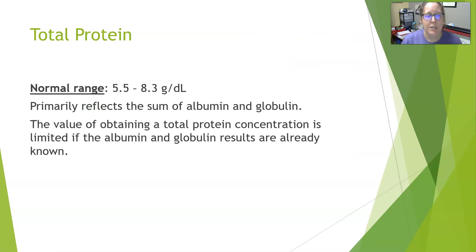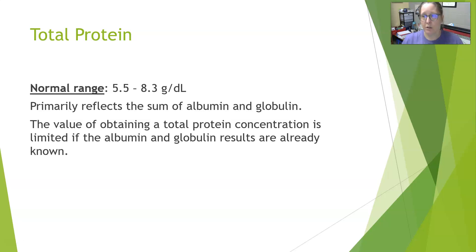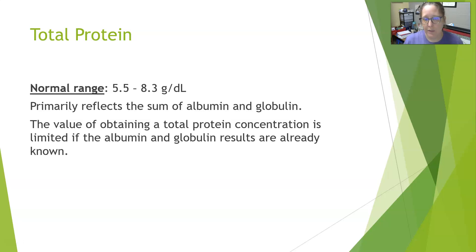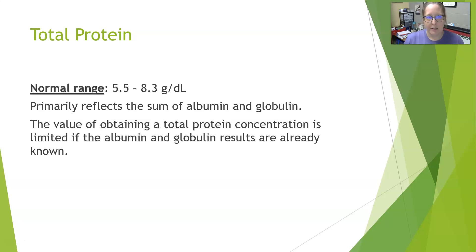The total protein normal range is 5.5 to 8.3 grams per deciliter, and it primarily reflects the sum of albumin and globulin. Add all the albumins and all the globulins together — that's pretty much all the proteins in your body, not really counting fibrinogen. The value of obtaining a total protein concentration is limited if the albumin and globulin levels are already known. If albumin decreases significantly, the total protein will decrease as well, since half of the total protein is albumin. In the context of liver disease, a drop in total protein is a concern.